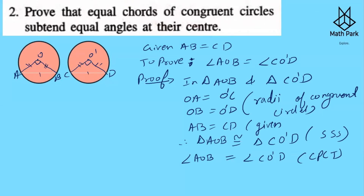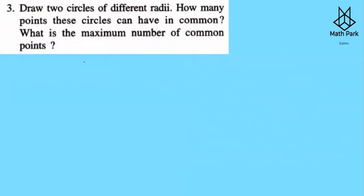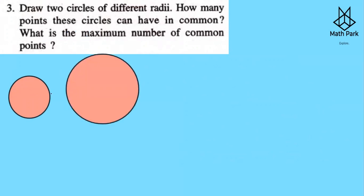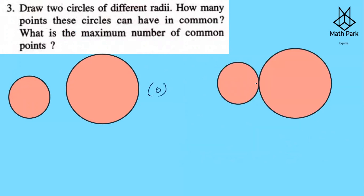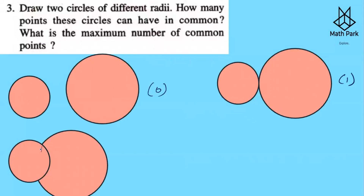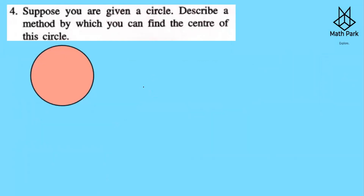Question 3: Draw two circles of different radii — how many points do they have in common? If the circles don't intersect, zero points in common. If they touch at exactly one point, one point in common. If they intersect each other, two points in common. If they are congruent circles (same radius), they have infinitely many points in common.